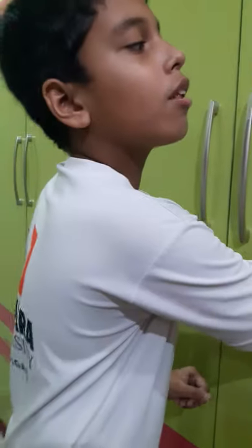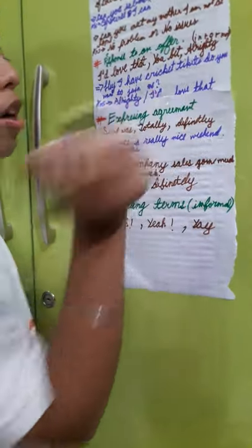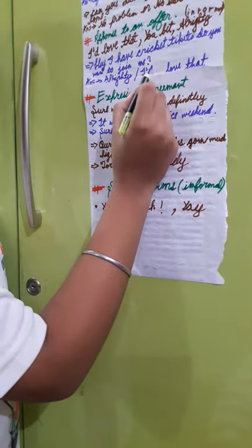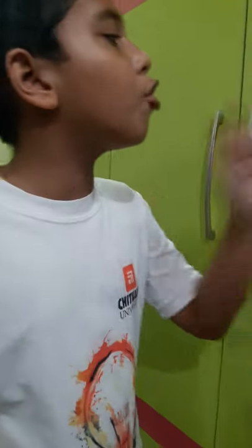For example: hey, I have cricket tickets — do you want to join me? Instead of saying yes I will, you can say 'all righty' or 'I would love that.' 'You bet' is also similar to 'sure I can' — it's a basic expression. Share your sentences using 'you bet' in the comments.